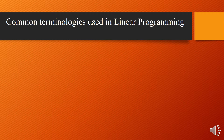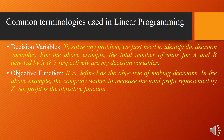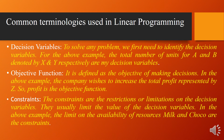Common terminologies used in linear programming: The first is decision variables. To solve any problem, we first need to identify decision variables. In our example, the total number of units for A and B, denoted by X and Y respectively, are the decision variables. The next is objective function — it is defined as the objective of making a decision. In the example, the company wishes to increase total profit represented by Z, so profit is the objective function. Constraints are the restrictions or limitations on the decision variables. It is not easy to maximize profit because you have limited resources — they are called constraints and limit the value of decision variables. In our example, the availability limits on milk and cocoa are the constraints.